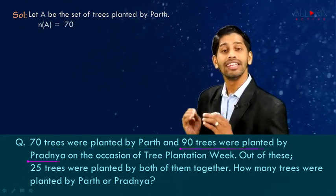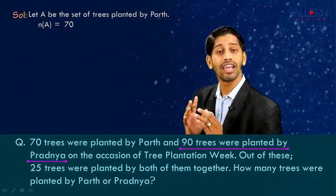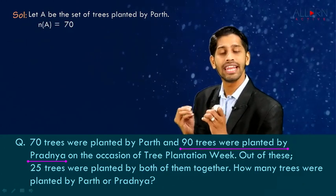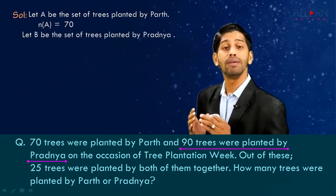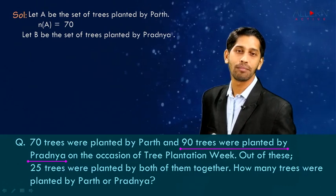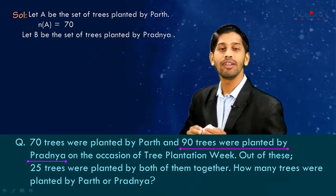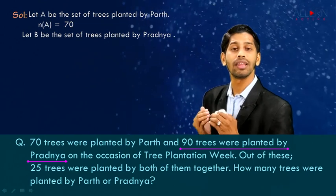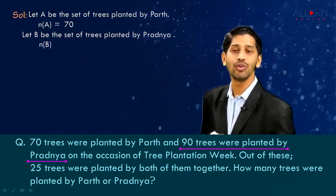Further, it says that 90 trees were planted by Pratnya. So for Pratnya we are going to assign a capital letter — we can assign any letter. Let's take letter B. So we'll write: let B be the set of trees planted by Pratnya. Since the number of trees planted by Pratnya is given as 90, we can write in mathematical form as n(B) = 90.